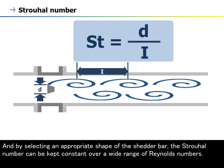And by selecting an appropriate shape of the shedder bar, the Strouhal number can be kept constant over a wide range of Reynolds numbers.